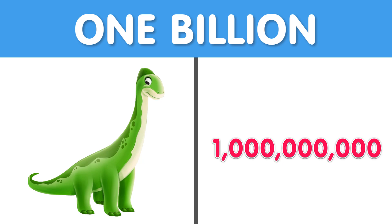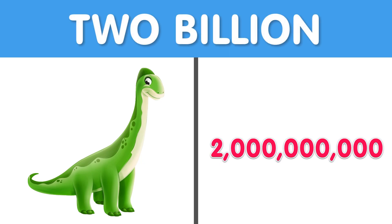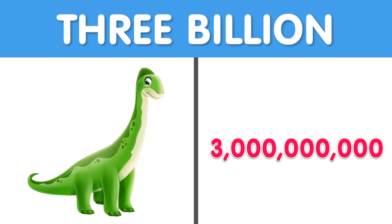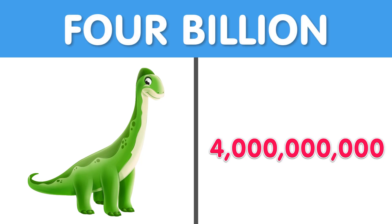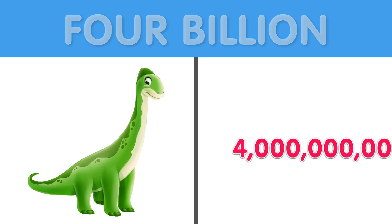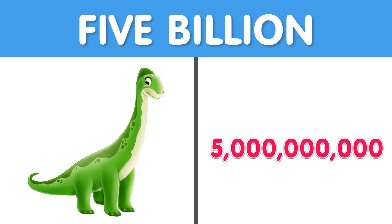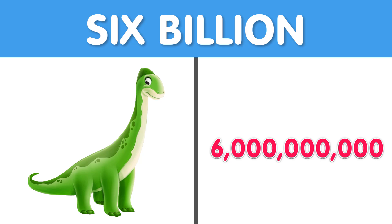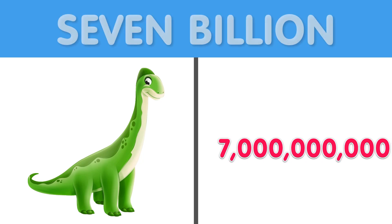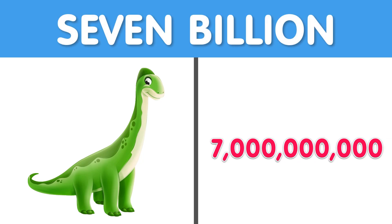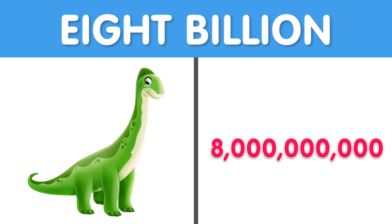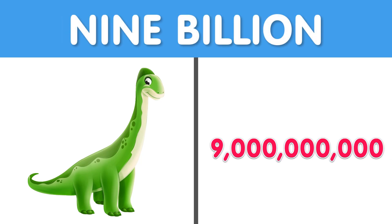1,000,000. 1,000,000. 2,000,000,000. 2,000,000. 3,000,000,000. 4,000,000,000. 5,000,000. $6 billion. $7 billion. $8 billion. $9 billion.